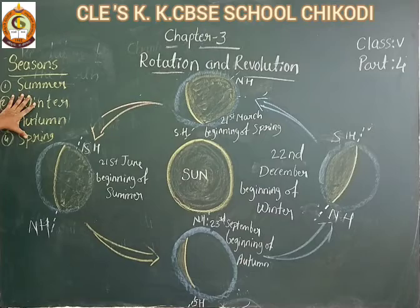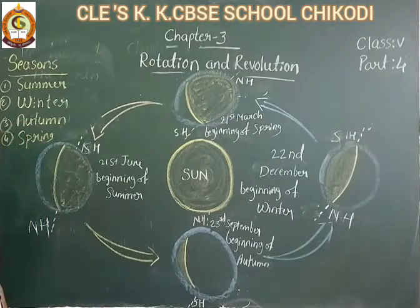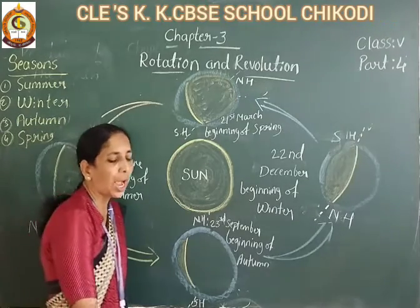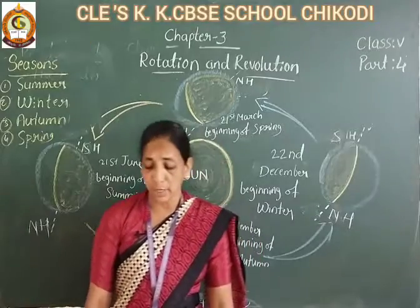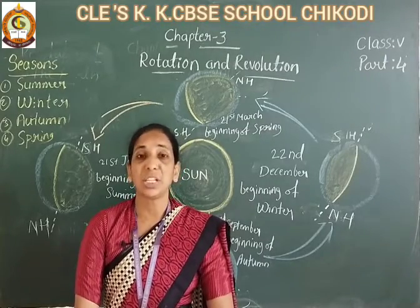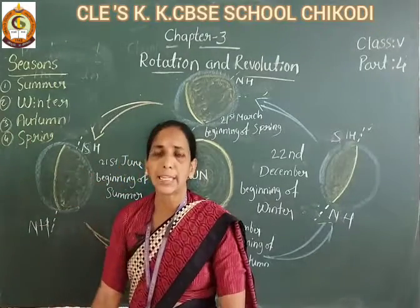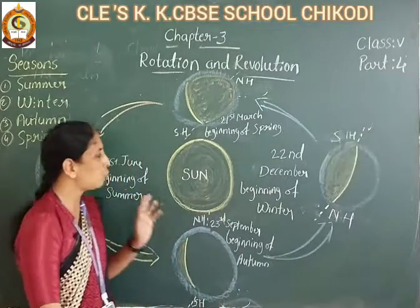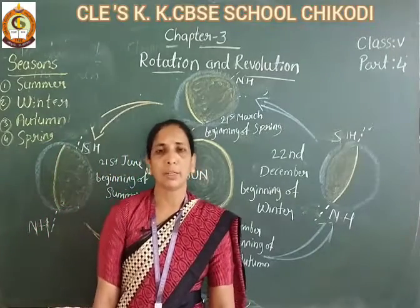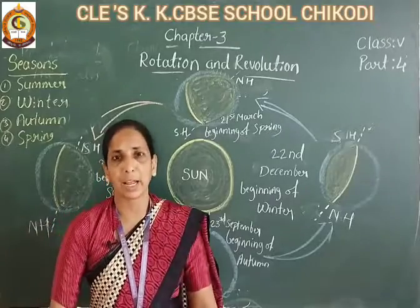So these are the four seasons. Chapter number 3, Rotation and Revolution, part 4, is now completed. In today's class, you have learnt about revolution and the seasons of the earth — summer, winter, autumn, and spring. You have to draw the diagram and make the points. After completing your homework, send it to my WhatsApp number. I will continue in the next class. Thank you.